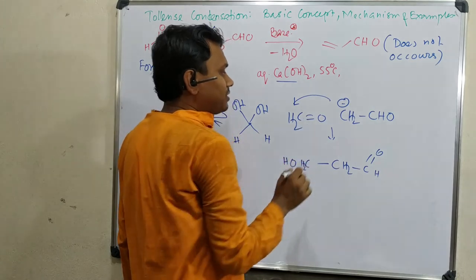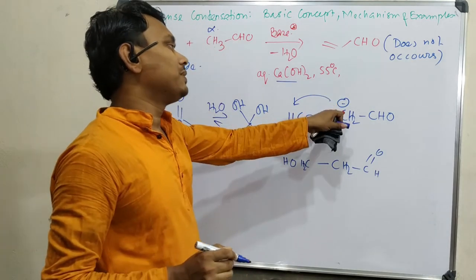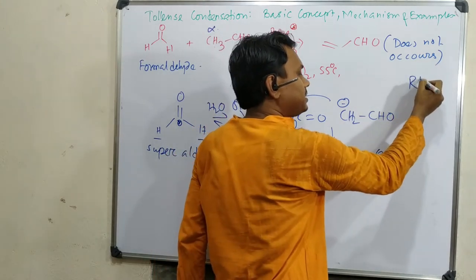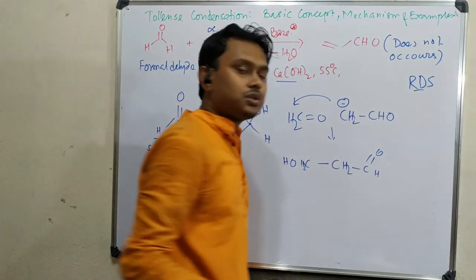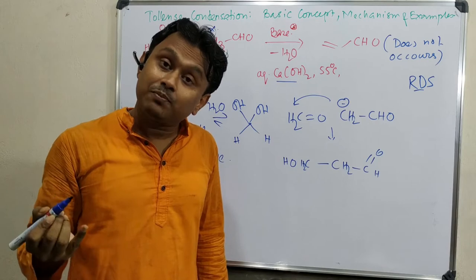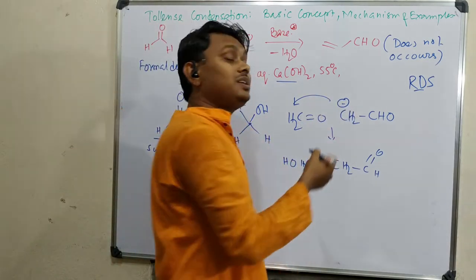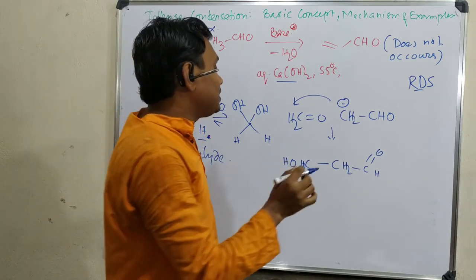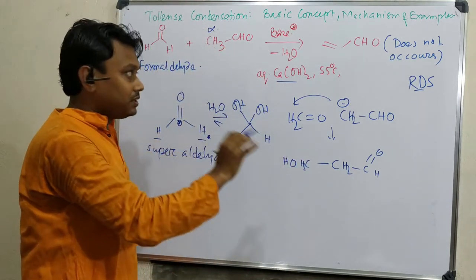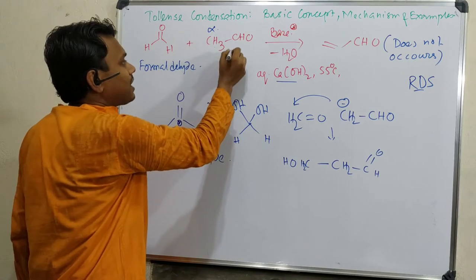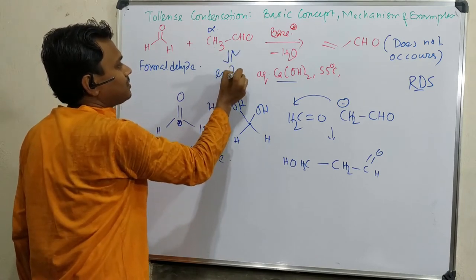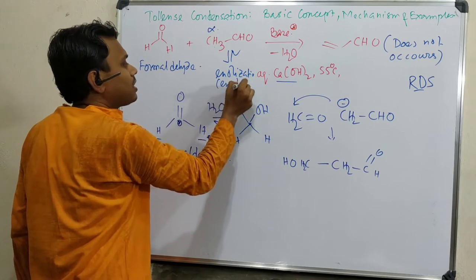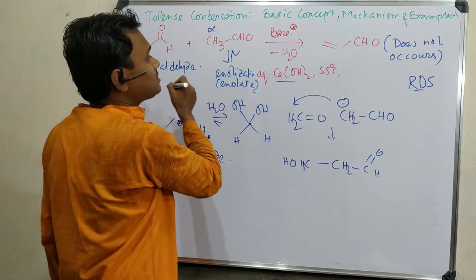And we expect after that it undergoes base-catalyzed dehydration to produce this. But that doesn't happen. Reaction doesn't stop here. Why? Because formaldehyde is so reactive. We generally consider the attack of enolate to carbonyl is the rate-determining step in case of aldol condensation. But in case of formaldehyde, that problem is not there because attack is very easy, very less bulky.